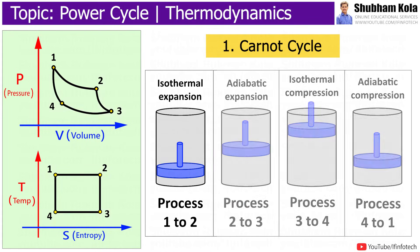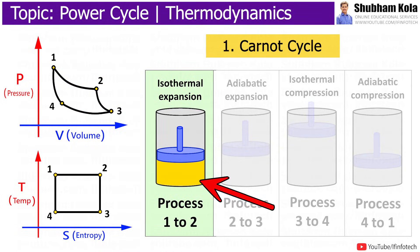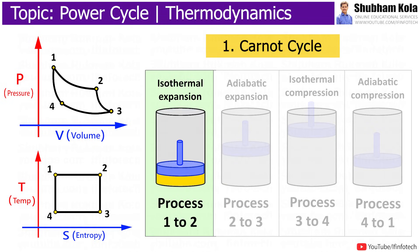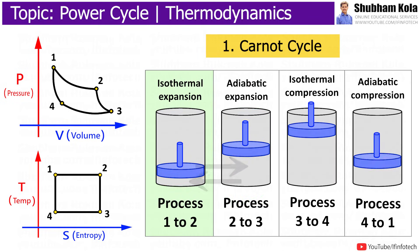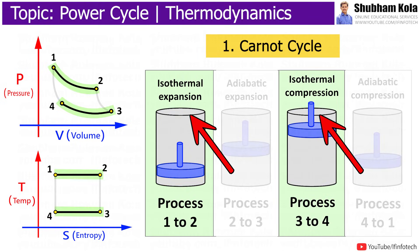In the Carnot cycle, ideal gas is used as the working medium. There is no friction between the piston and cylinder wall, and no heat transfer between the surroundings and the system. Heat addition and heat rejection are carried out at constant temperature, which is why the Carnot cycle is also known as the isothermal cycle.